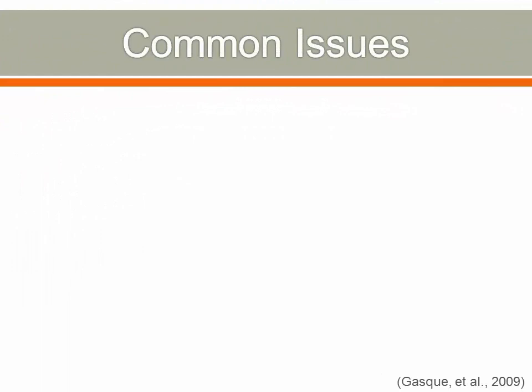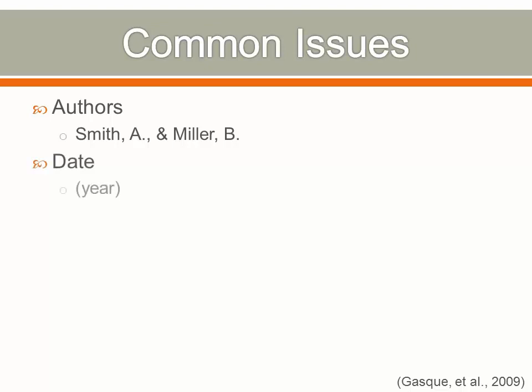Here are some common issues students have with references. Authors are listed last name, first initial — very different from other writing styles that may include the author's full name. When including multiple authors, the initial is followed by a comma. The date is typically limited to the year, and is only expanded if a more narrow date is required to find the original source, such as discussion posts, online communities, and electronic messages.